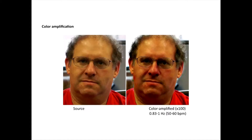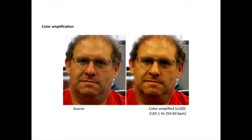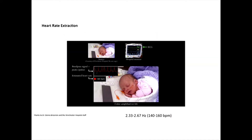We can also amplify small color changes — this is done differently from what I described before. All of you are glowing like little light bulbs as the pulse goes to your skin with oxygenated blood, and we can amplify that and let you see it. Asymmetries in this would possibly be useful in non-contact diagnosis. We can also do non-contact measuring of infants' pulse, which is useful in some cases.